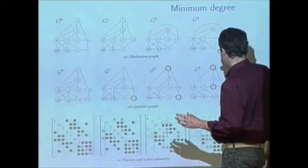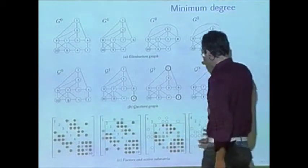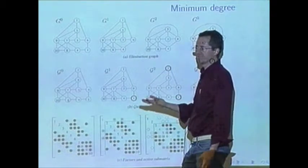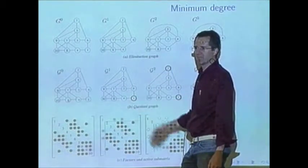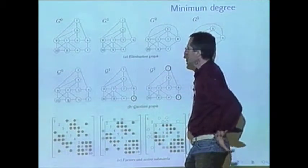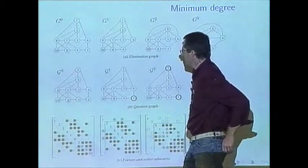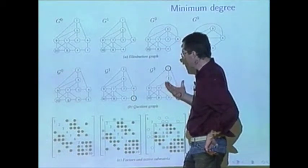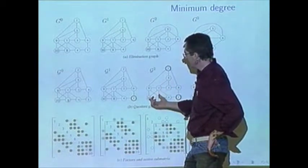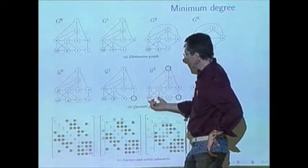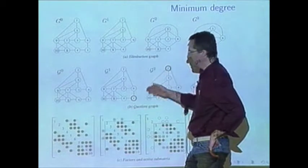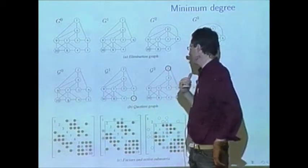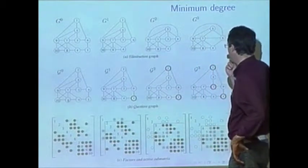Picking node 10 is free in the sense that it causes no fill-in. Its neighbors already form a clique. A strategy might be, instead of selecting the node of least degree, select the node that causes the least fill-in. In that case, you'd pick node 10 because it causes no fill at all.